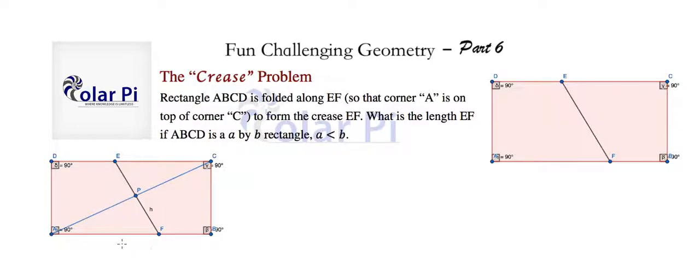crease EF and diagonal AC have to be perpendicular to each other. Also notice that I've called half the length of our crease H. So the length of PF here is H. Keep that in mind.